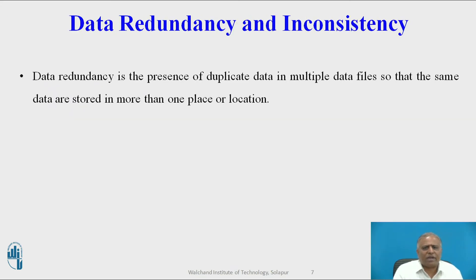Data redundancy is the presence of duplicate data in multiple files, so that the same data are stored in more than one place or location. Data redundancy occurs when different groups in an organization independently collect the same piece of data and store it independently of each other. Data redundancy wastes storage resources and also leads to data inconsistency, where the same attribute may have different values. For example, in instances of the entity course, the date may be updated in some systems but not in others, and the same attribute student ID may have different names throughout the organization.